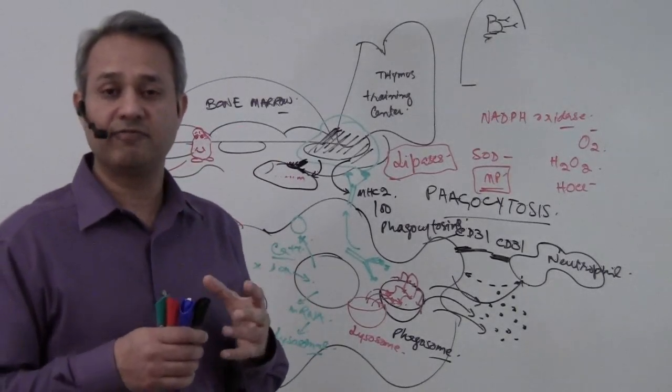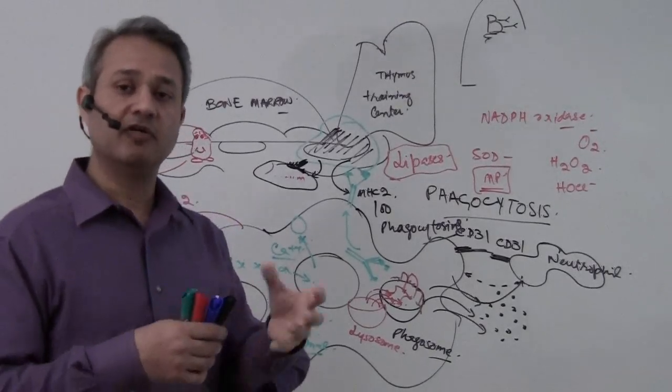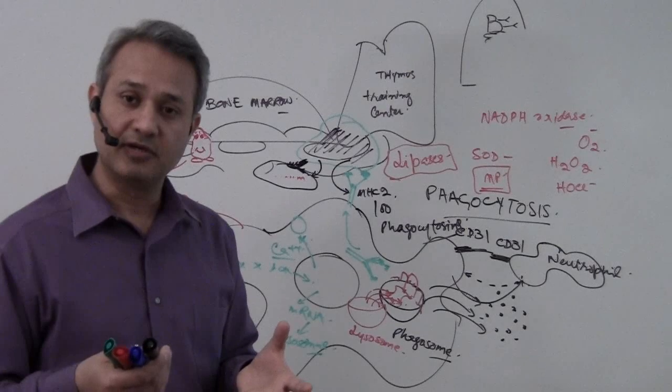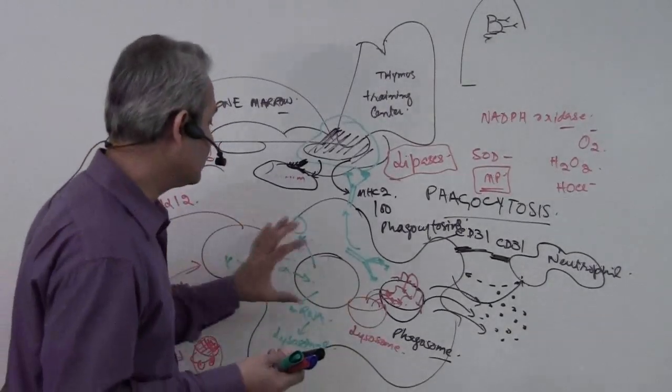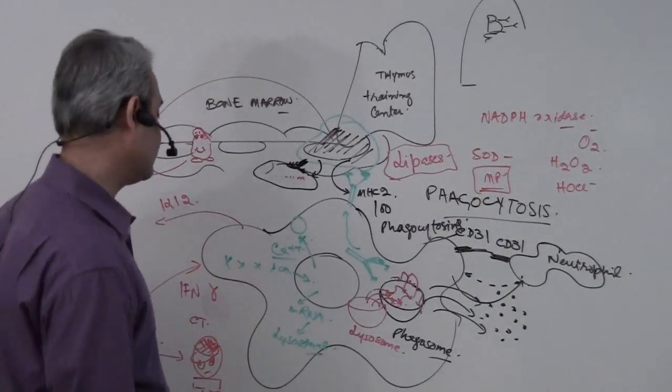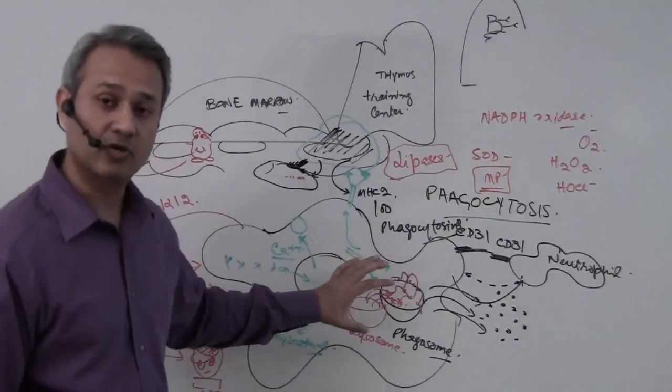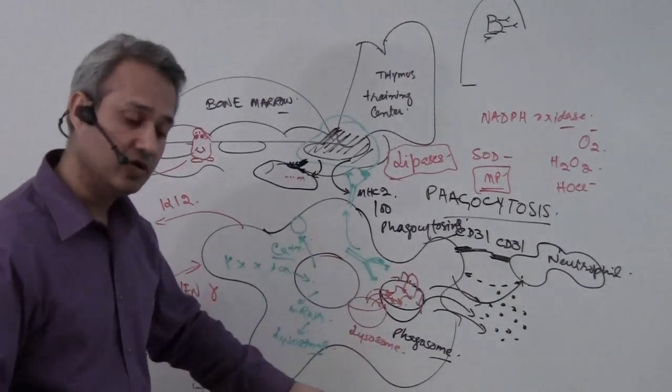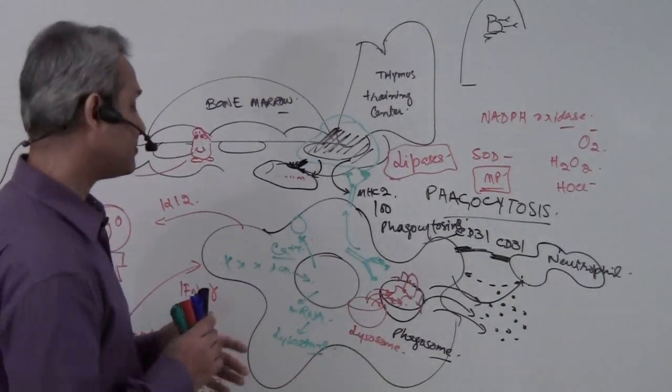Whenever a phagocyte, whenever a macrophage would eat up something, it would present it. So just the function would be enhanced. But we should know how the function will be enhanced. The function is enhanced because interferon gamma is going to go and act on the proteins and the subcellular machinery to increase the functionality.